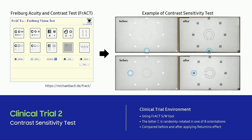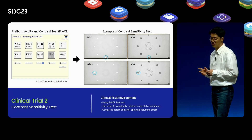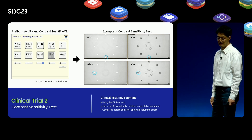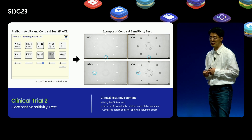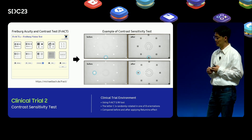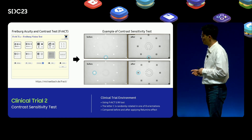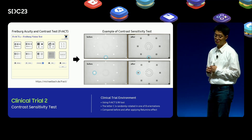We also conducted a contrast sensitivity test using a private vision test software tool used in vision and clinical trials around the world. In the contrast sensitivity test, the C character is randomly rotated to one of eight directions, and the subject is tested on whether they can identify which way it is oriented. The test is performed multiple times, with difficulty automatically adjusted depending on the user's answer. After the test is completed, you can check the calculated contrast sensitivity score — the higher the score, the higher the user's contrast sensitivity.